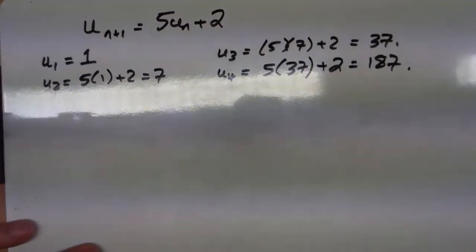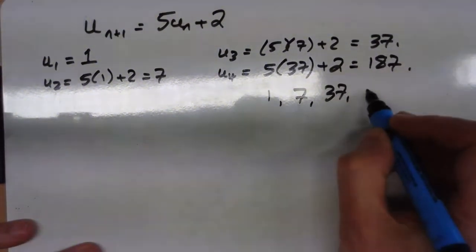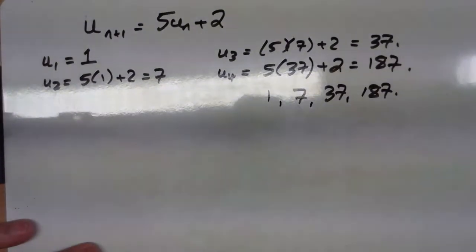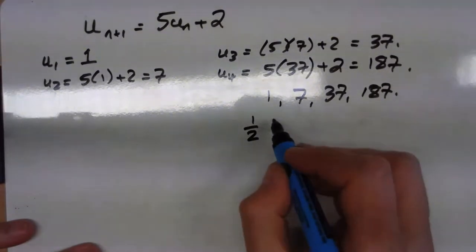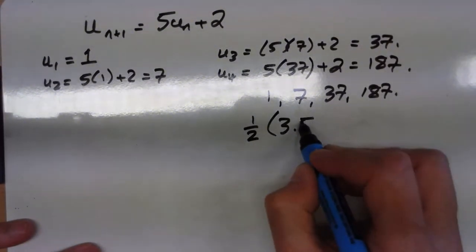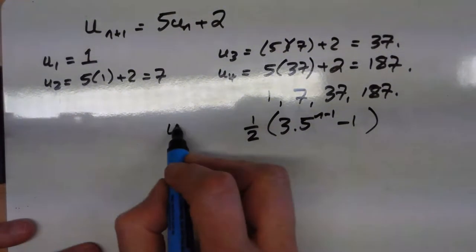But what it's now saying is that this sequence here, 1, 7, 37, 187, is actually the sequence 1 half, 3 times 5 to the n, take away 1, take away 1. We need to try and prove this.